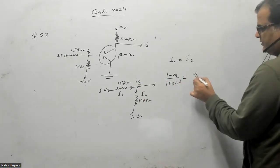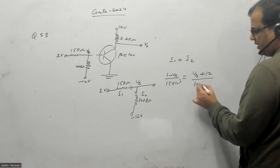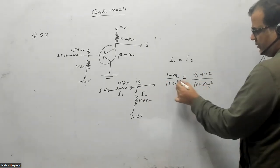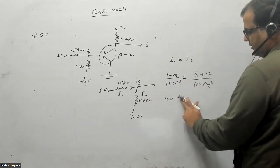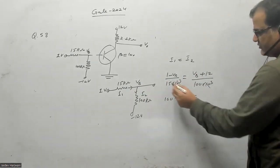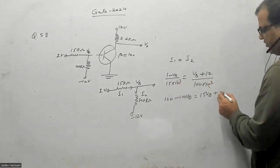So 1 minus VB upon 15 kilo ohm will be equal to VB minus minus 12, which is VB plus 12, upon 100 kilo ohm. If I solve this one, this gives me 100 minus 100 VB, and this gives me 15 VB.